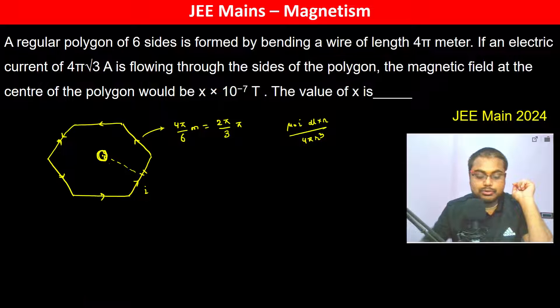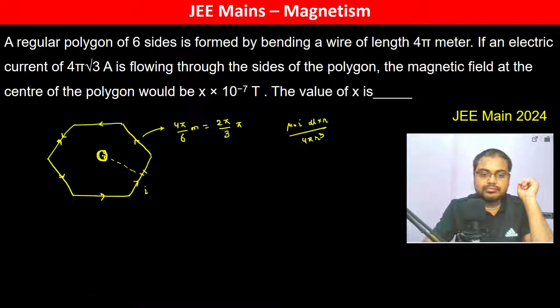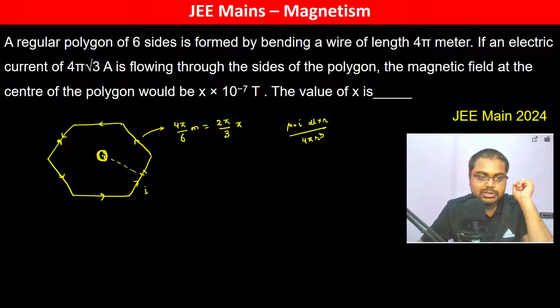Let us use this formula: μ₀i l / 4πd (sin α + sin β), where l is 2π/3 meters.